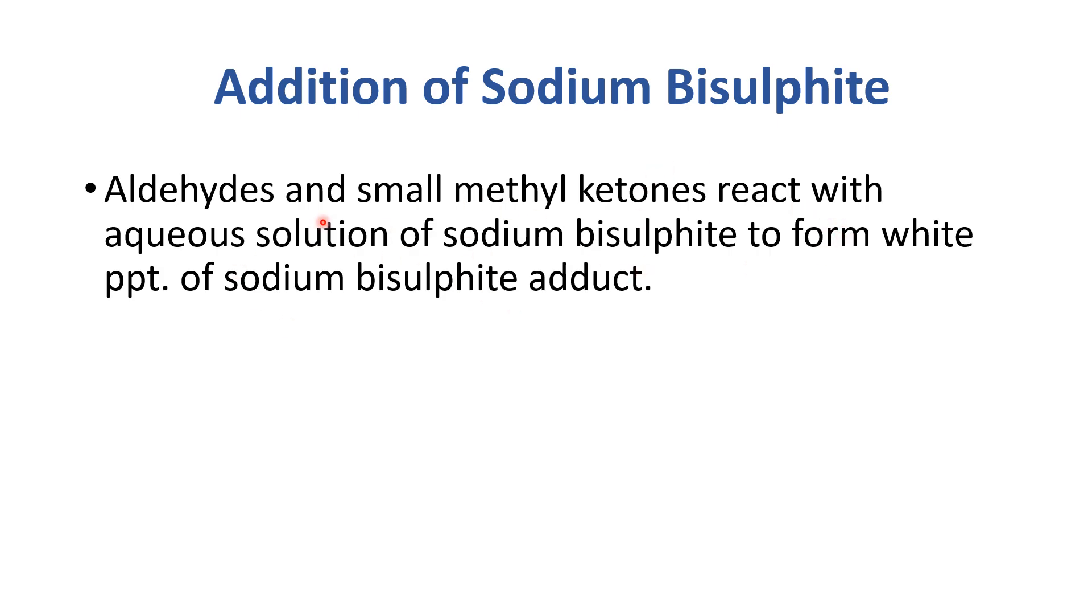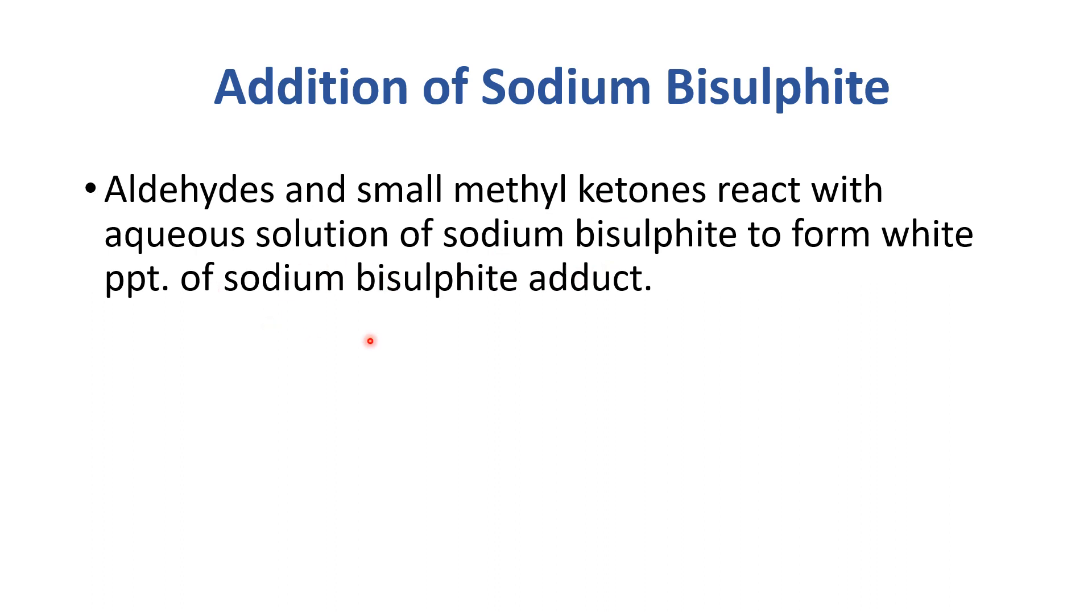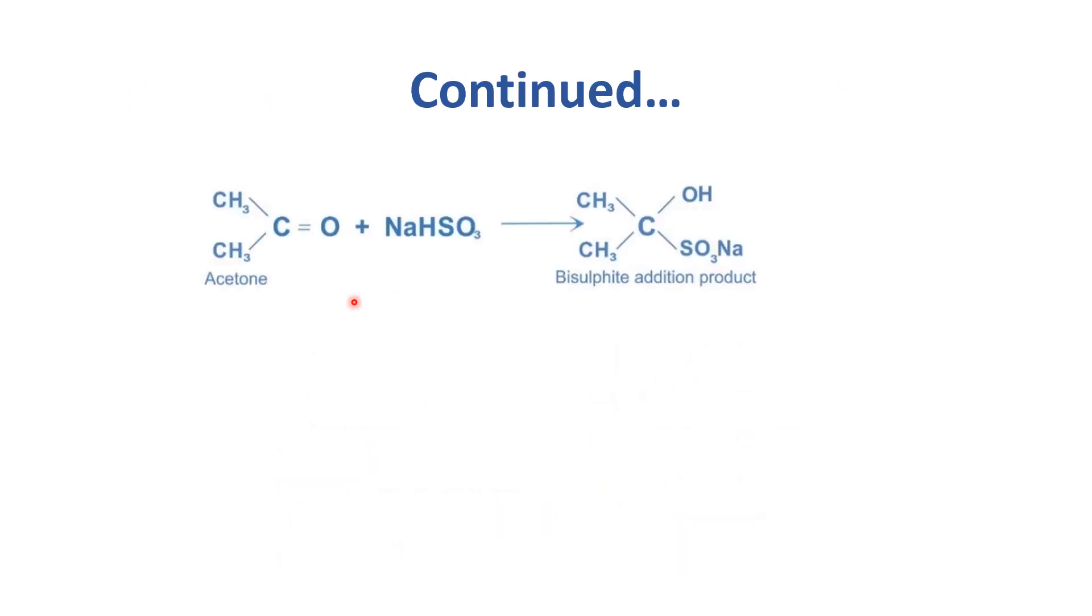Aldehydes and small methyl ketones react with aqueous solution of sodium bisulfite to form white precipitate of sodium bisulfite adduct. Formaldehyde will react with NaHSO3, that is sodium bisulfite. Here the H will be attached with this oxygen and the rest of the SO3 and sodium will be attached. With this double bond it will break into a single bond and at the next end SO3 will be attached. Similar products will be formed with formaldehyde or acetaldehyde. Acetone also reacts with bisulfite addition product.